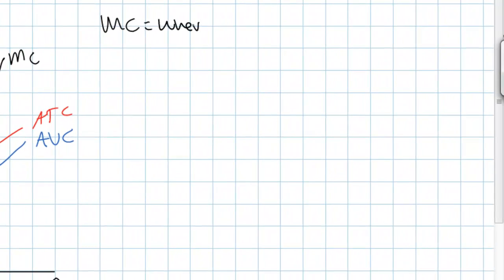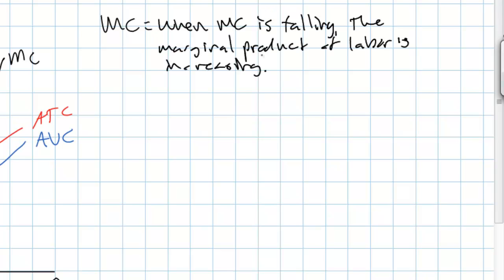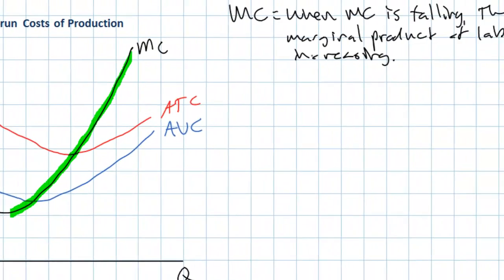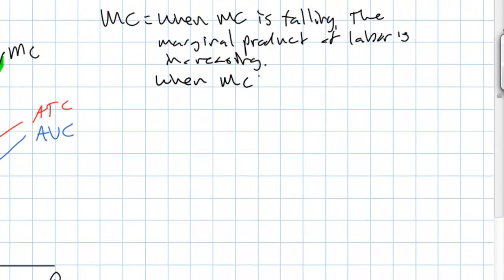So when marginal cost falls, the output of additional workers is greater than the workers hired before. However, beyond a certain level of output, if the firm continues to employ more workers, we begin to see the marginal cost increase — in other words, the cost of additional units of output rises. This occurs because of diminishing marginal returns. So when marginal cost is rising, the output of additional workers is less than the workers hired before; the firm is experiencing diminishing marginal returns.